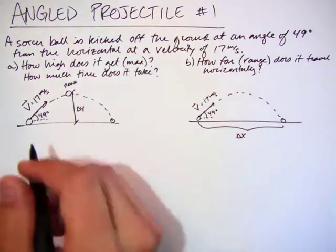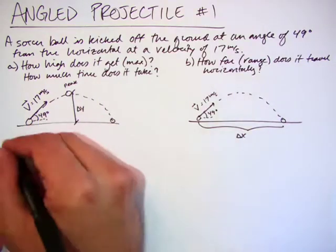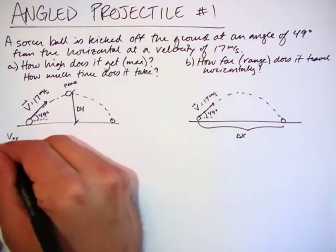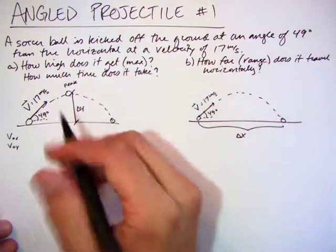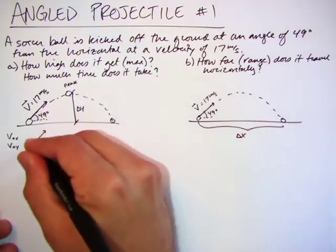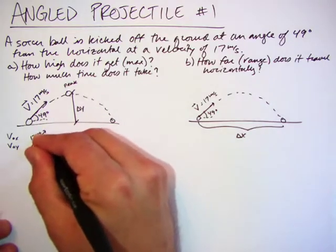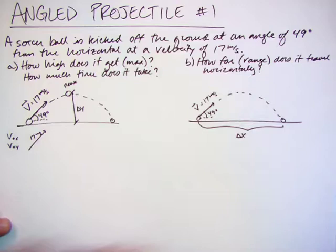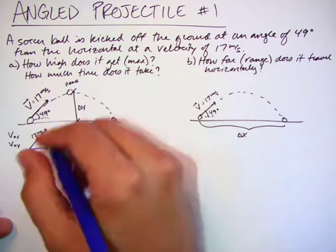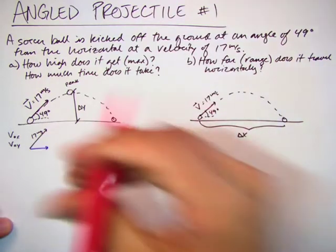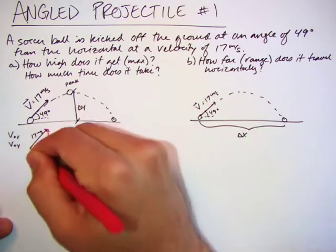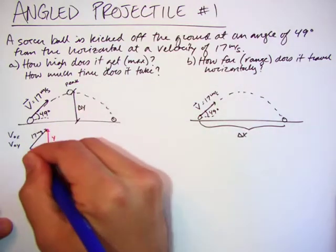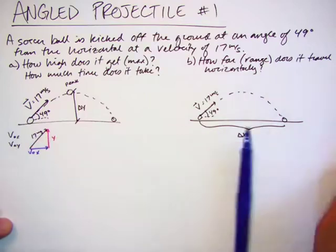Let's start by looking at the first part, the peak. Now what do I do here? Well before I can even start the problem, I need to figure out what are my initial x and y velocities of the velocity vector. So I'm going to take that vector, 17 meters per second magnitude at 49 degrees, and I'm going to break it into my x component and my y component. So this is really v0x and v0y.